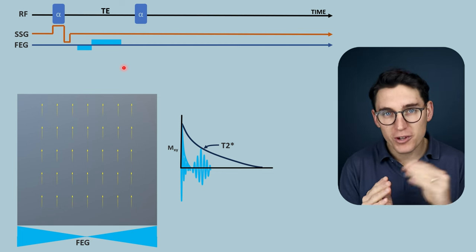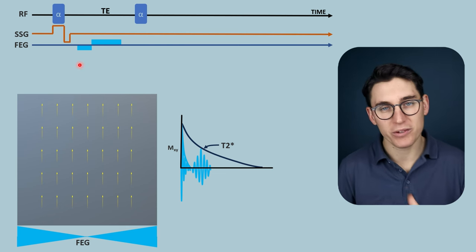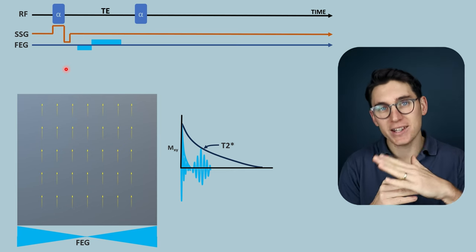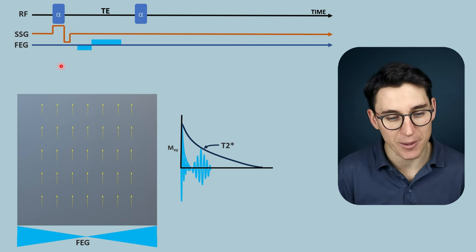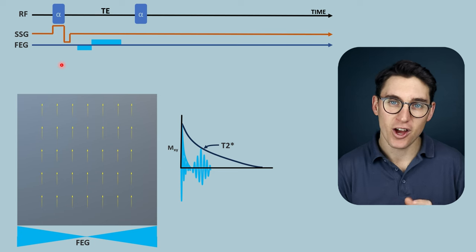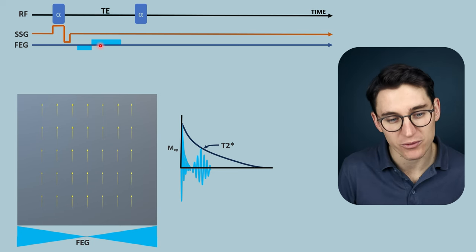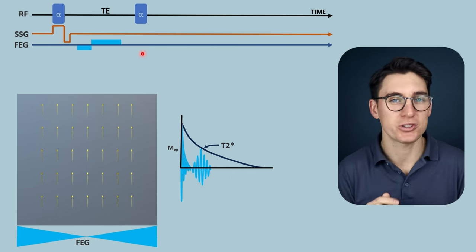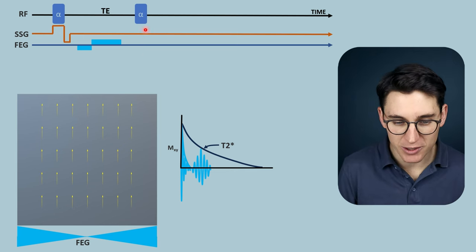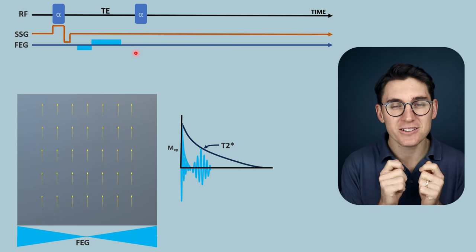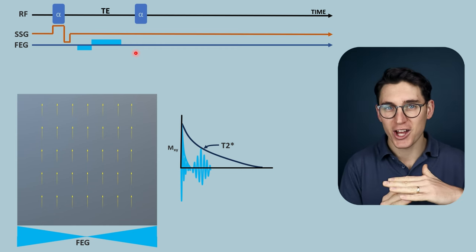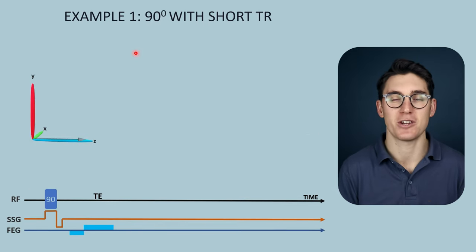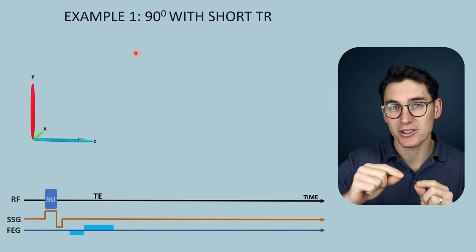Today's talk will focus specifically on flip angles — how much we flip spins out of the longitudinal plane into the transverse plane — and show how differing the flip angle has different effects on signal from our slice. We'll also look at how different flip angles allow very short TRs while still achieving T2, T1, and proton density weighting. How can we have a short TR but still have a T2 weighted image? The flip angle is the key.